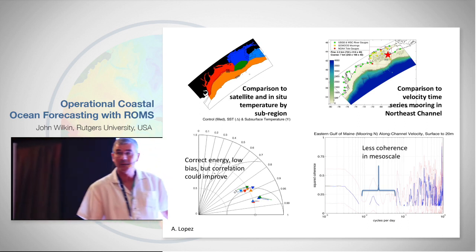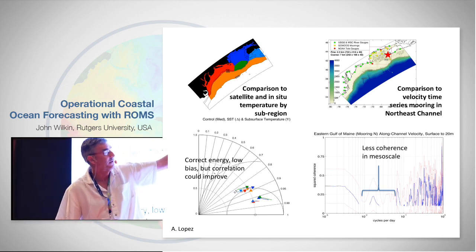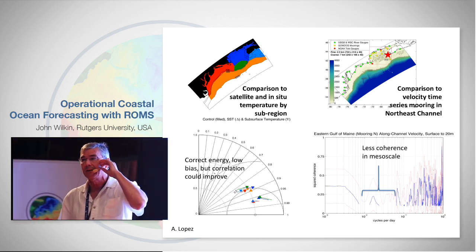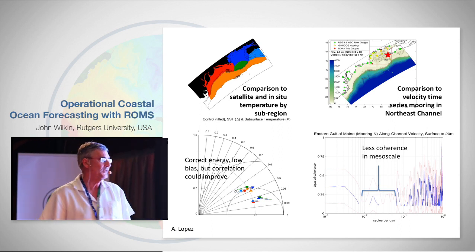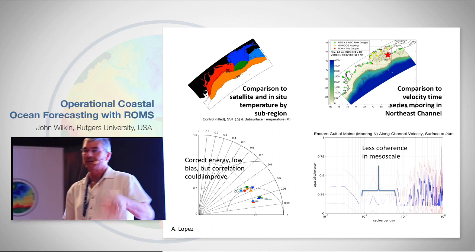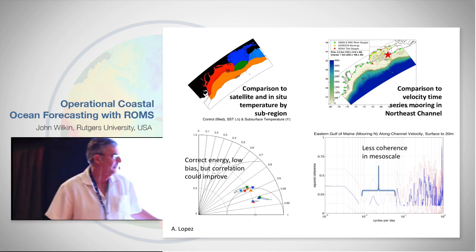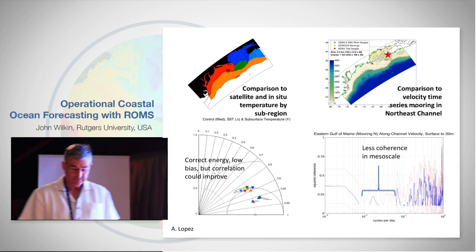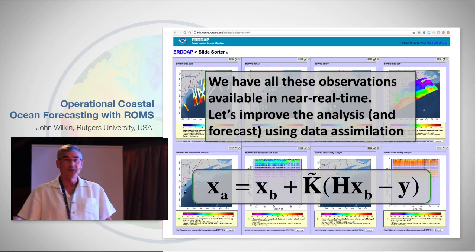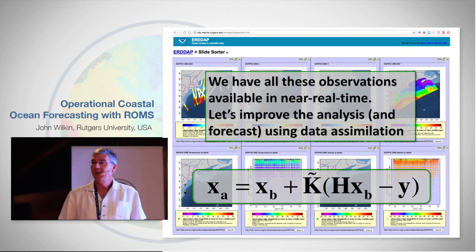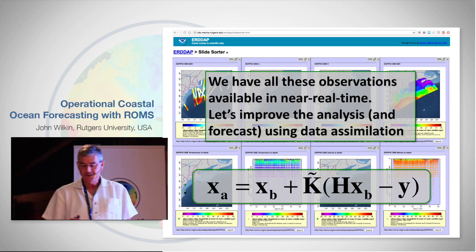We've got the right size wiggles, but they're not quite in the right place. Similarly, when we look at mooring time series near the entrance to the Gulf of Maine, we've got the very high frequencies accurate because our tides and meteorological forcing are good. The low frequencies are good because we've got the seasonal variability. But in the mesoscale, we have a gap in coherence — we want to get the wiggles in the right place.